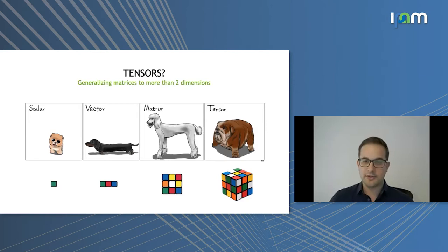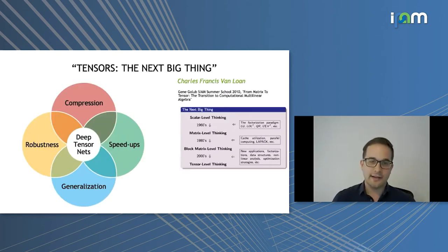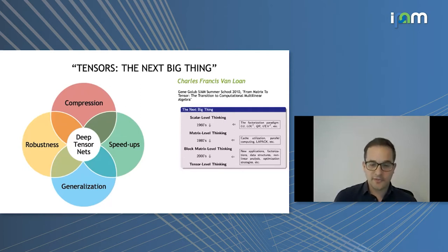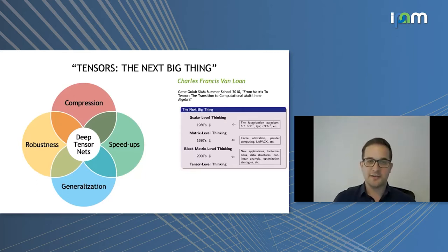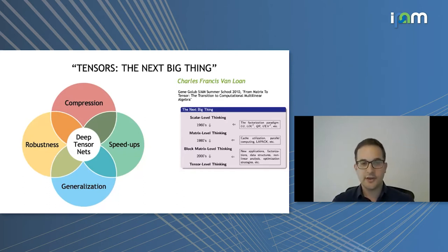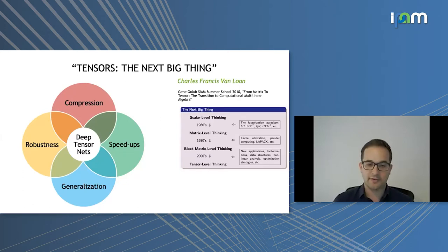For all purposes of this talk, by tensors I simply mean multi-dimensional arrays, and the order of a tensor is the number of dimensions. Charles Van Loon illustrated the shift in thinking from scalar level in the 80s to matrix level thinking and today tensor level thinking, leading him to say that tensors are the next big thing. In deep learning, tensors can give us compression — large reductions in number of parameters — speed-ups through more efficient operations, improved performance and generalization through better inductive biases, and better robustness to noise, adversarial attacks, or domain shifts.